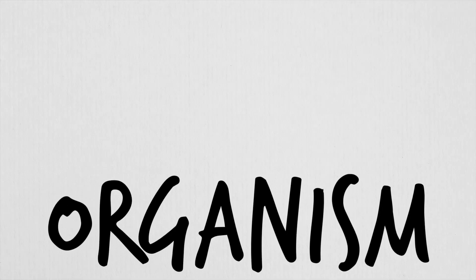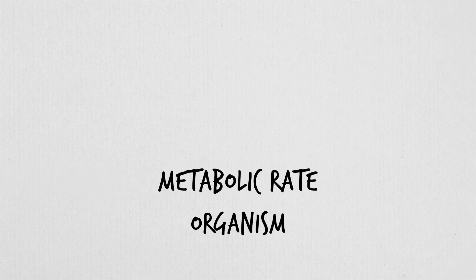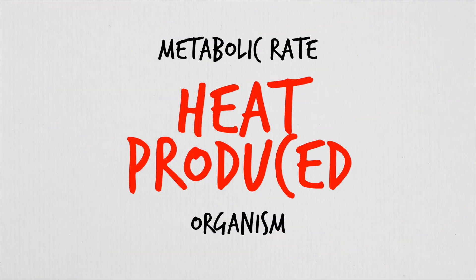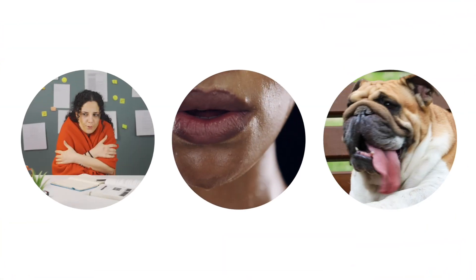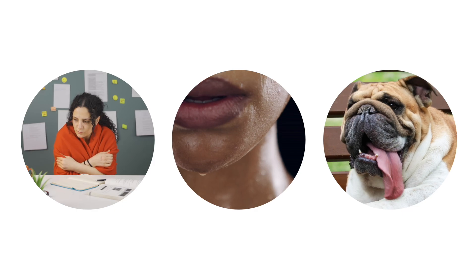Some of this energy will be spent to regulate body temperature. Endothermic organisms use thermal energy created by metabolism to maintain homeostasis. Generally, the smaller the organism, the higher the metabolic rate, and more heat produced. It's no surprise, then, that endotherms also have great insulating structures, like the blubber of whales and feathers of birds. They also have behaviors to regulate heat, like shivering, sweating, or panting.